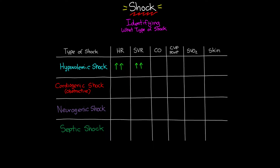Looking at preload indicators in hypovolemic shock: since preload depends on blood returning to the heart, and we don't have much volume to return, we'll see a decrease in preload indicators. As a result of that decreased preload and the volume loss, you will see a decrease in cardiac output. Due to decreased perfusion, blood moves slowly and cells extract more oxygen, so venous oxygen saturation is also decreased.